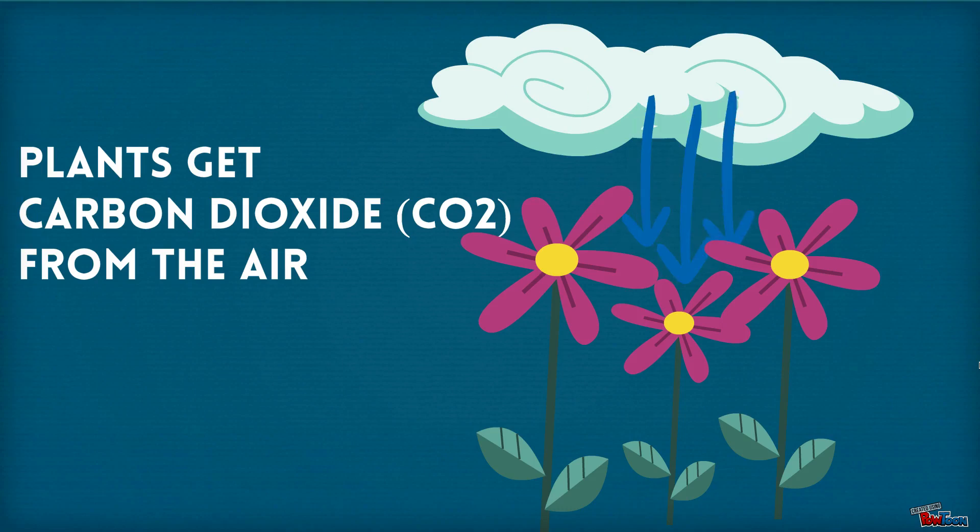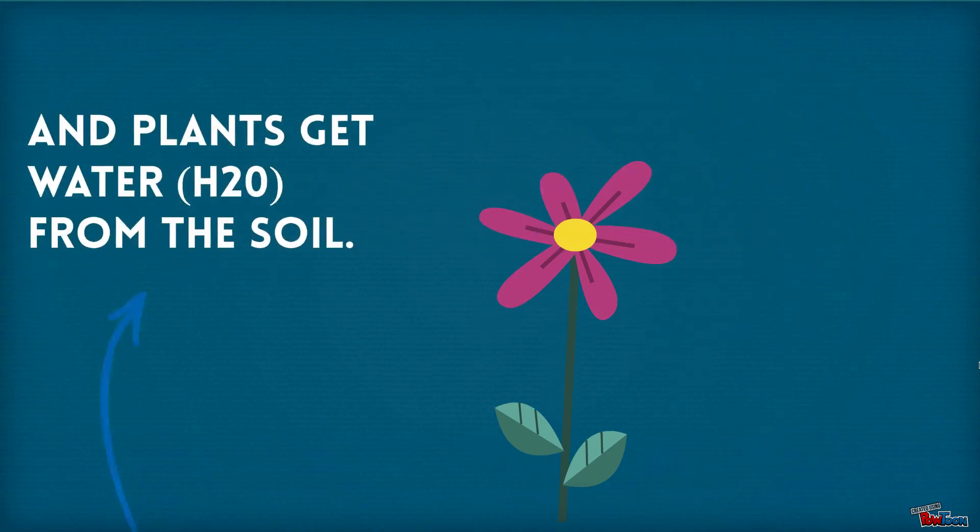Plants get carbon dioxide, CO2, from the air. And plants get water, H2O, from the soil.